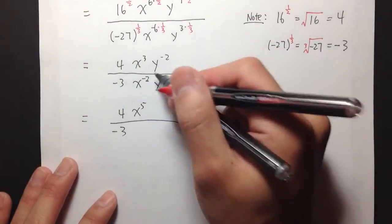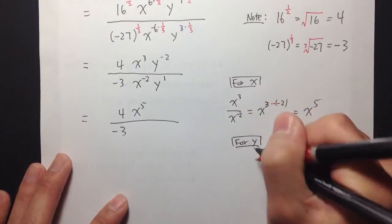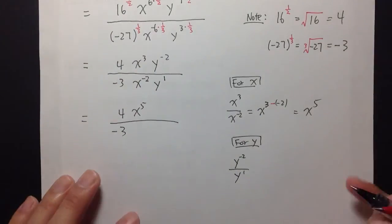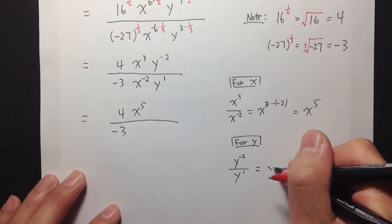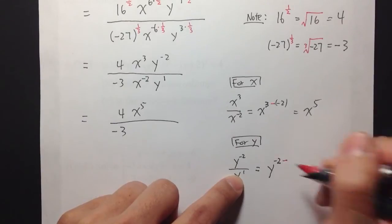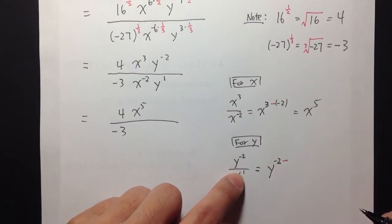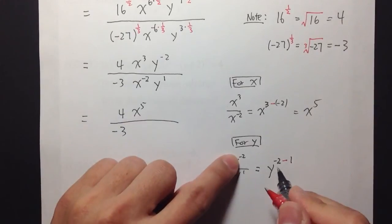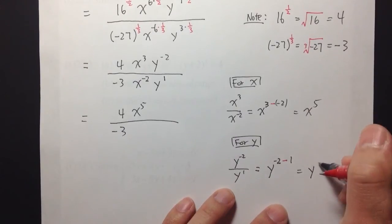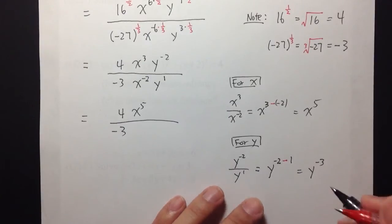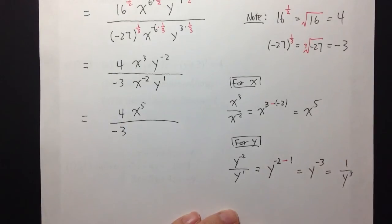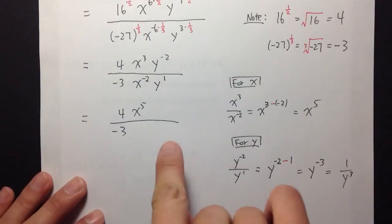And then for y, we are looking at y to the negative 2 over y to the first. I will take the power on the top, which is negative 2, minus the power in the denominator, which is 1. Negative 2 minus 1 gives us y to the negative 3. But when we have a negative exponent, it goes down to the denominator, so we get 1 over y to the third power. So we put y to the third power in the denominator.